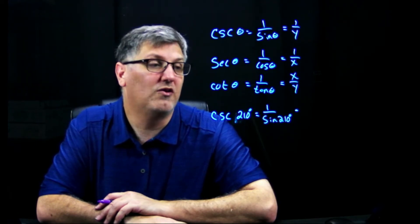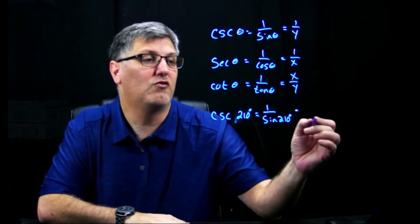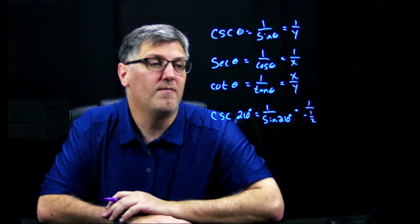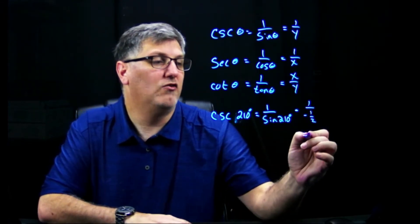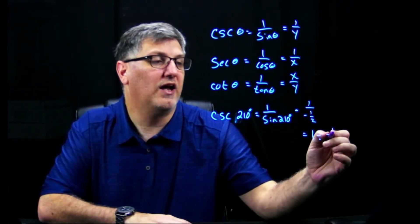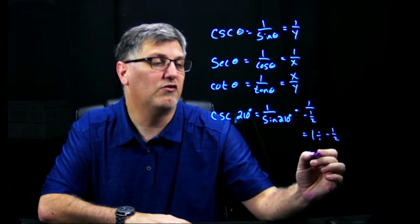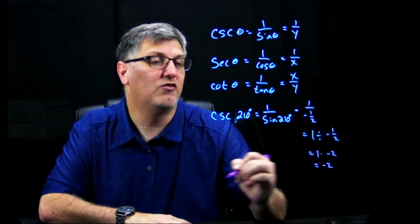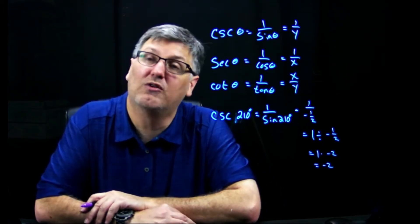So sine at 210 degrees is going to be a 30, so that's going to be 1 over negative 1 half. Well, this really means 1 divided by negative 1 half, which simply gives me 1 times negative 2, which gives me negative 2. So cosecant of 210 degrees is negative 2.